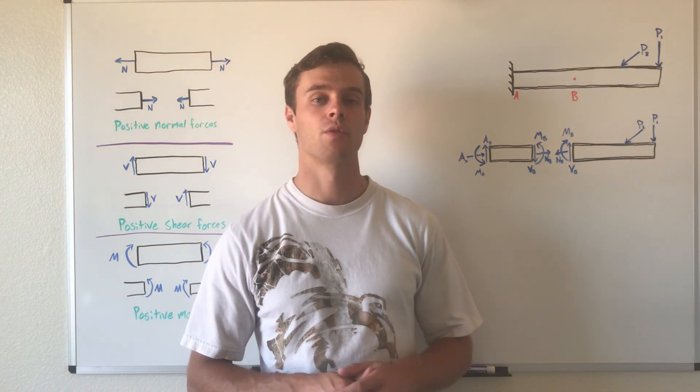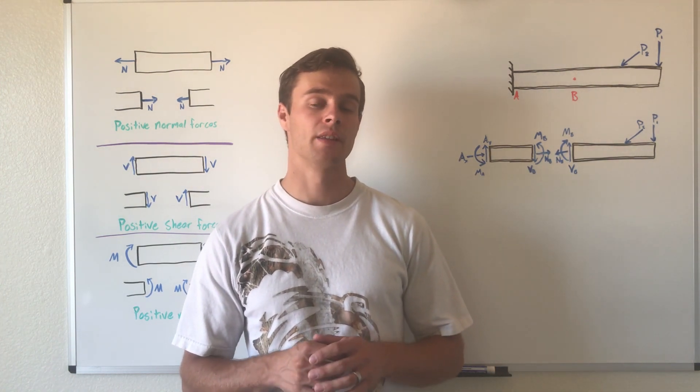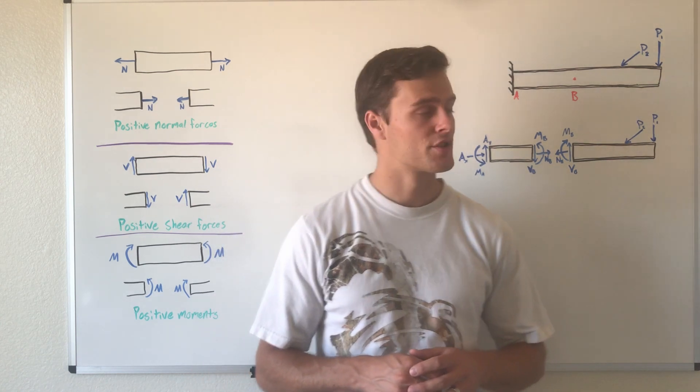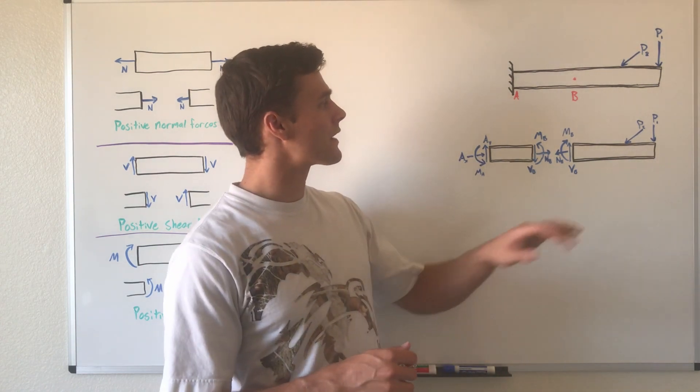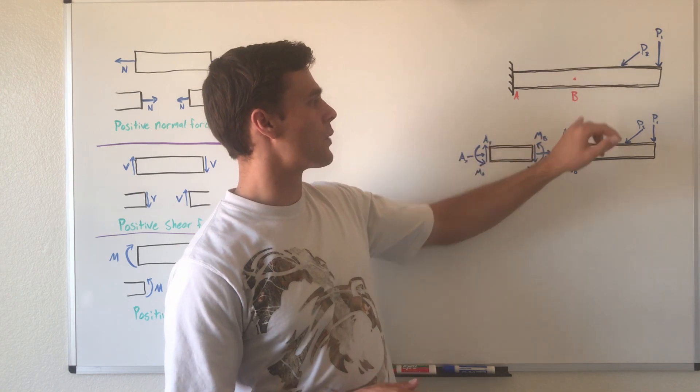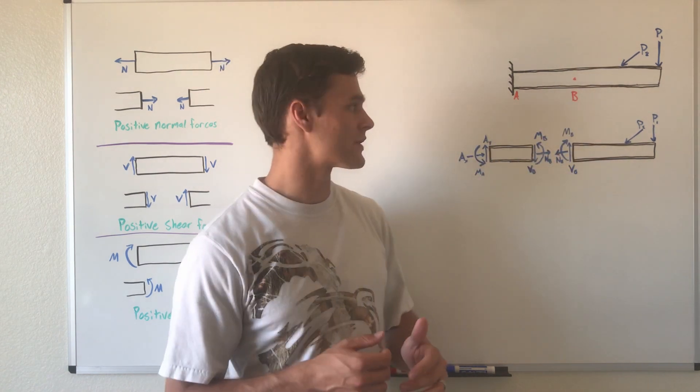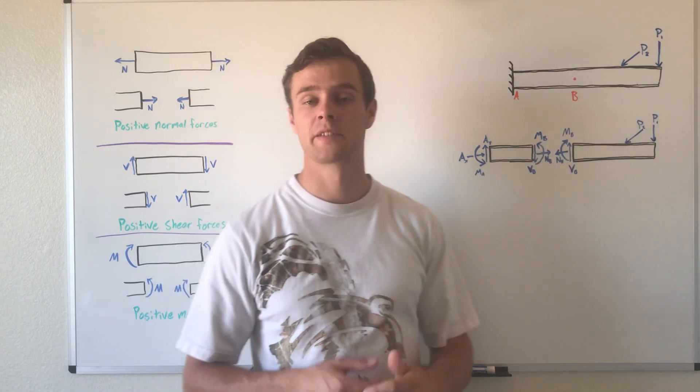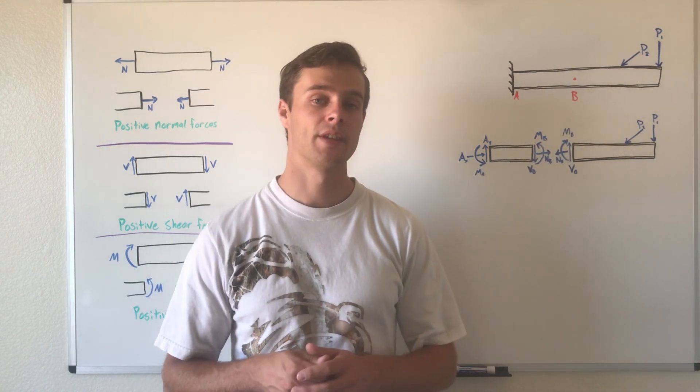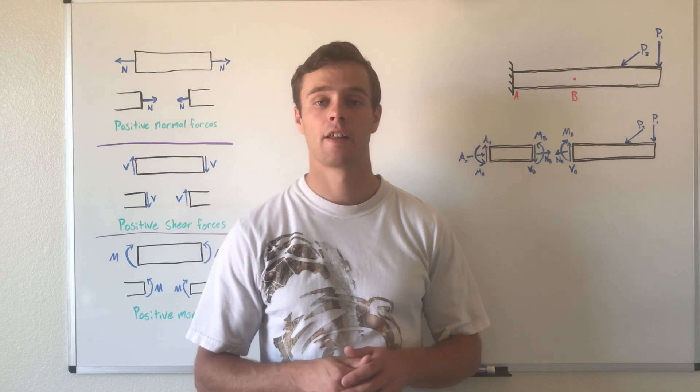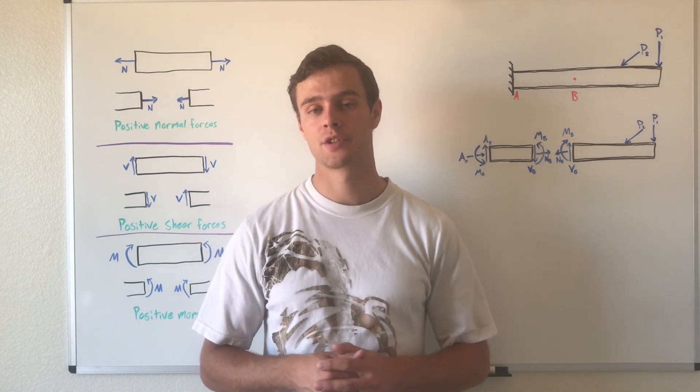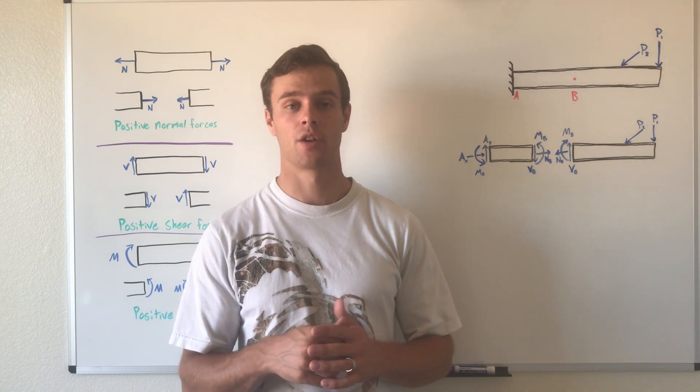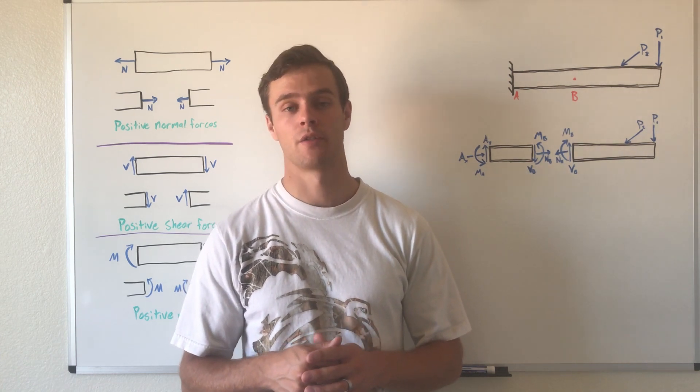You can find those internal forces using the method of sections, like we've done in analyzing trusses. We do that by cutting the member where we want to find the internal forces. Say here at point B—we cut it and expose those internal forces and represent them as external forces. That way we can use equilibrium equations to solve for those unknown forces, which are the internal forces we're trying to find.